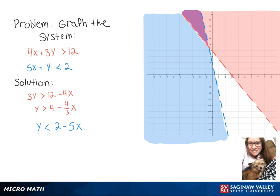And then since y is less than, we'll shade everything below. Our solution is going to be everything in that purple area, which is where the red and blue sections intersect.